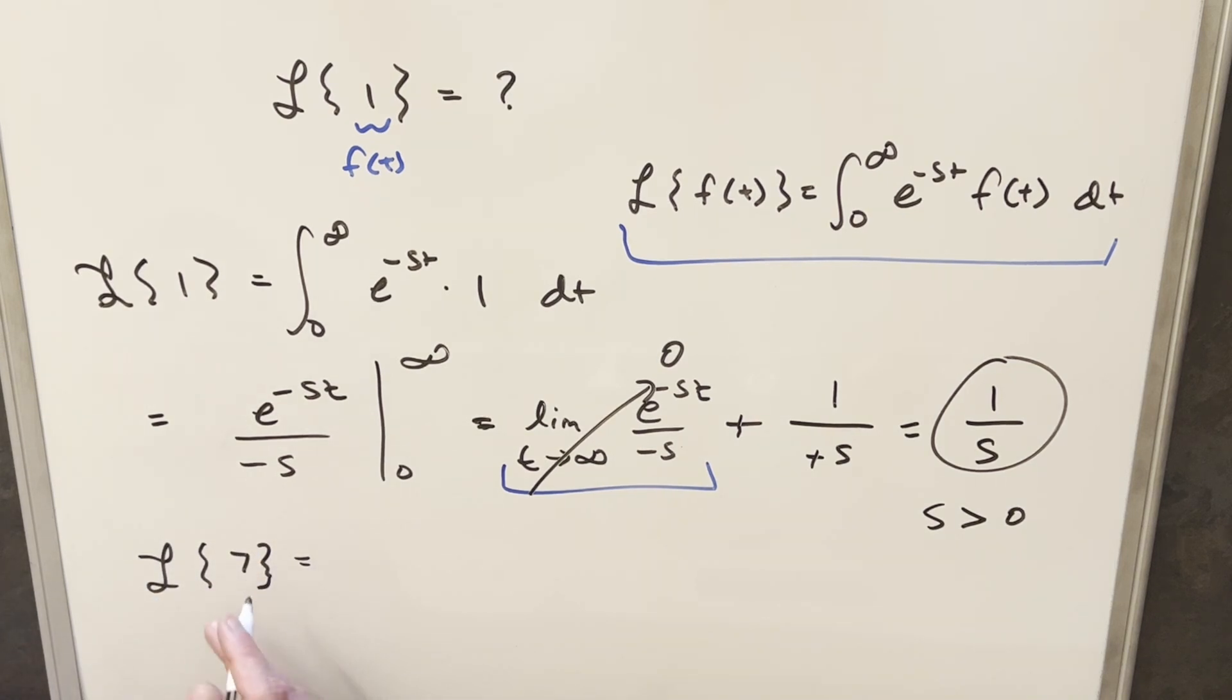But what that tells us is we actually have this property of Laplace transforms that you can factor a constant out. So for Laplace of seven, I can actually factor that seven out in front of the Laplace transform. We can write this as seven times Laplace of one, but we know what Laplace of one is. So we end up with seven times one over s, or just seven over s.